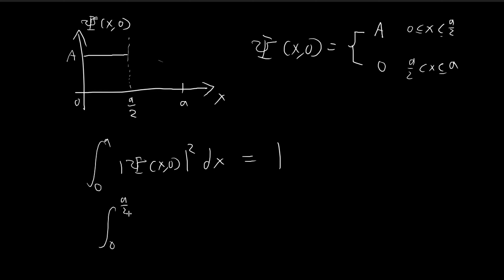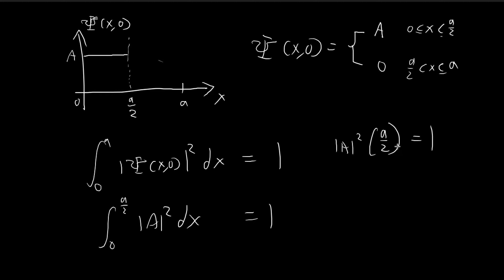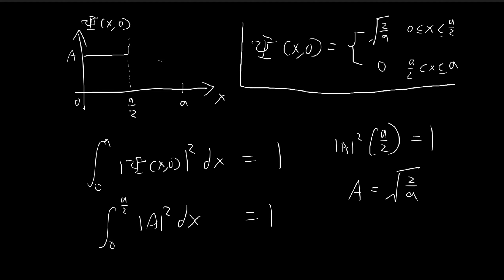From 0 to A over 2, the wave function squared is equal to this constant A squared. And then from A over 2 to A it's just equal to 0, so we can ignore that. Since it's just a constant, the integral gives A squared times A over 2 equal to 1. So in the end, you know that A is equal to the square root of 2 over a. So the answer to part A is the initial wave function expressed with this normalization constant.